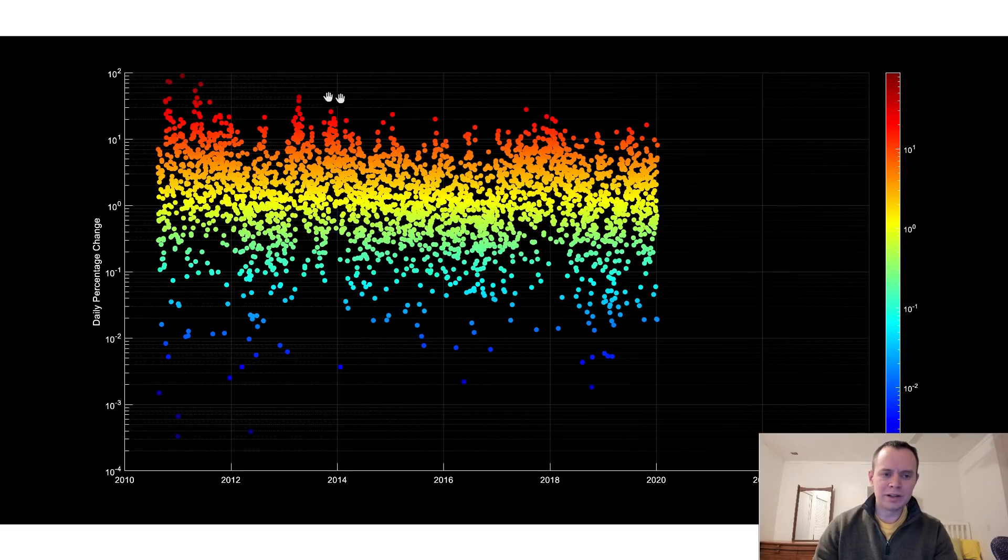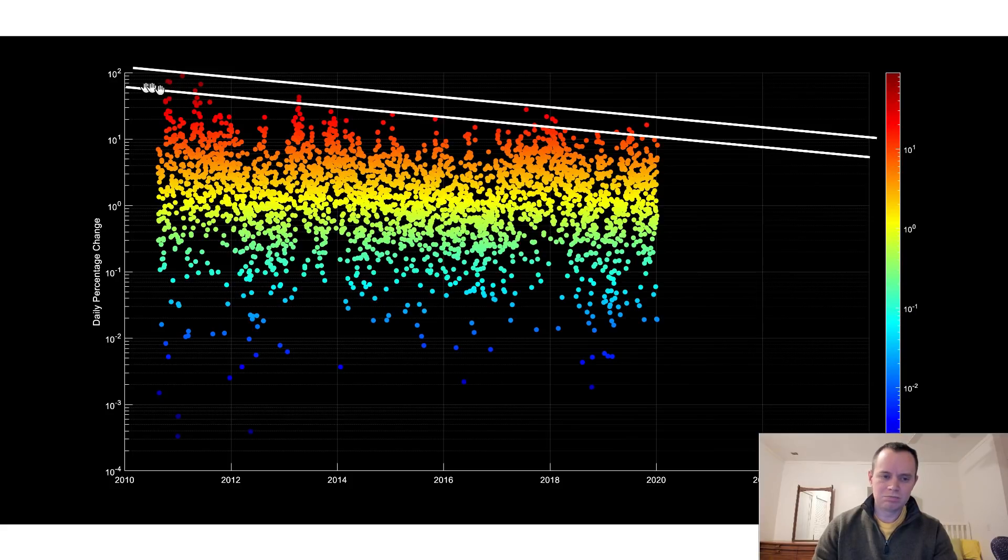So you can see there's clearly this upper region that does seem to be somewhat decreasing in a sense. And that would be the daily volatility.